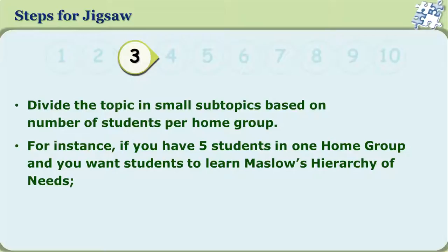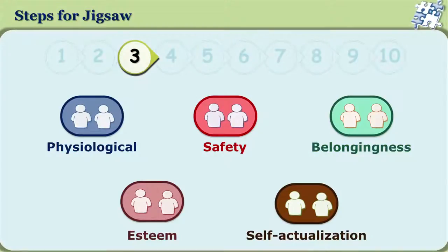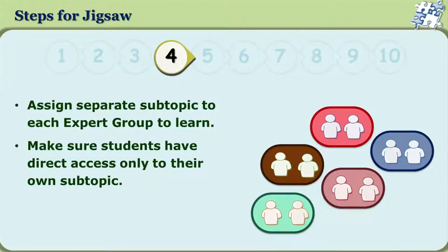For instance, if you have five students in one home group and you want students to learn Maslow's hierarchy of needs, then you need to divide them as physiological, safety, belongingness, esteem, and self-actualization. In step four, each separate subtopic is assigned to each expert group to learn. Group number one learns only about the physiological needs of Maslow's hierarchy of needs. Group number two learns only about safety needs, and so on. Every member of the expert group has access only to the subtopic assigned to them, and through discussions in this group, every member ensures they understand that subtopic thoroughly.